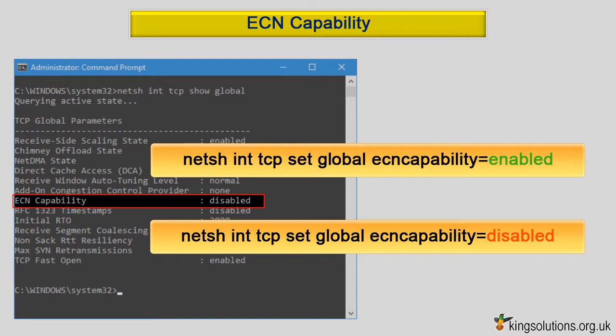netsh int tcp set global ecncapability=disabled and press enter. Do not forget to reboot your system for the change to take effect.